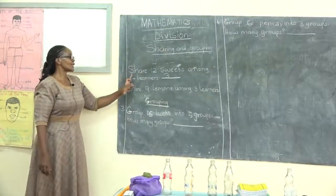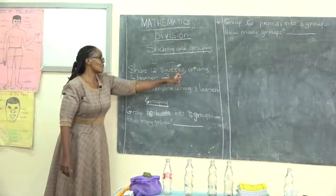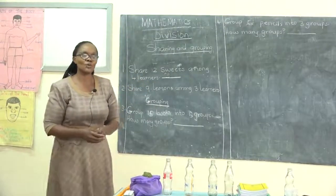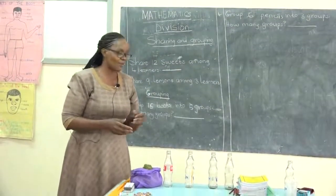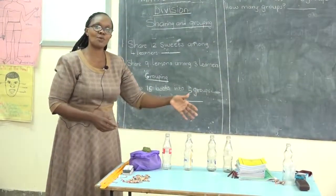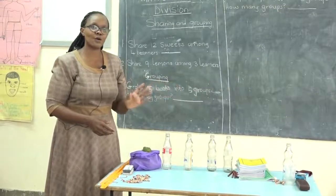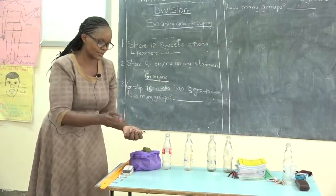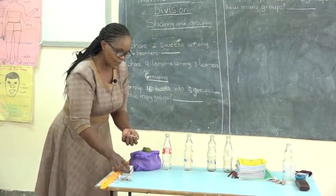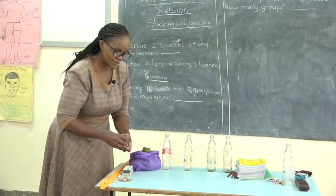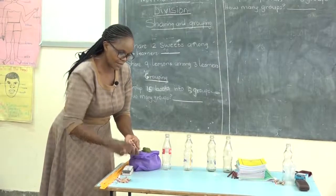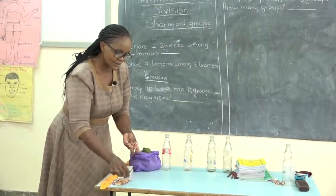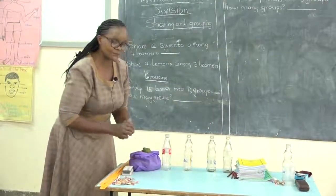The first question is: share 12 sweets among four learners. We don't have learners, but in front of me there are four bottles which are going to represent our four learners. My sweets are here. Let us confirm the sweets by counting: one, two, three, four, five, six, seven, eight, nine, ten, eleven, twelve.